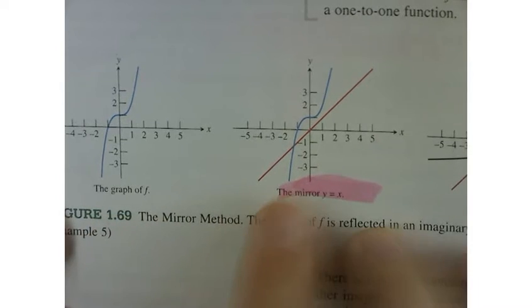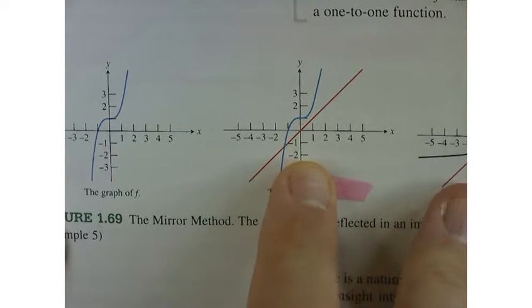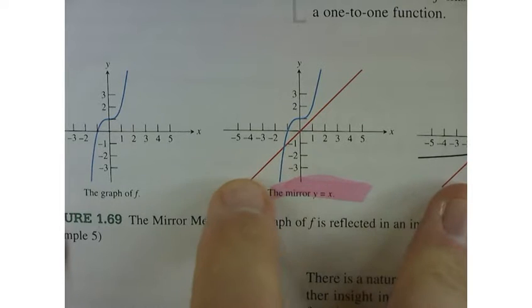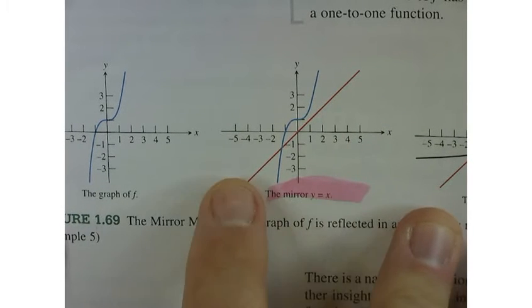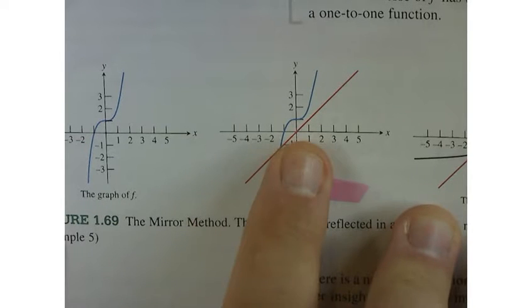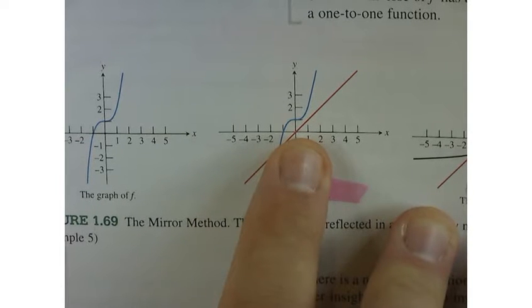Now, if we find the inverse function properly and we go to graph it, it should be a mirror image across the diagonal. The diagonal is y equals x, so it's a line with a slope of positive 1 that goes through the origin.